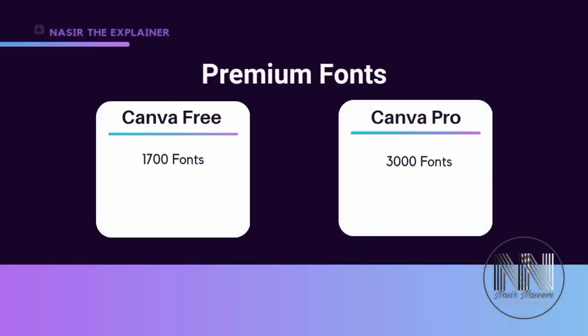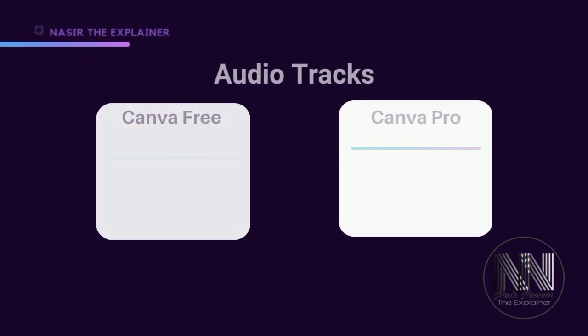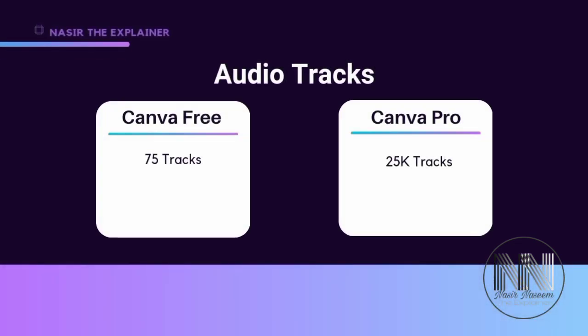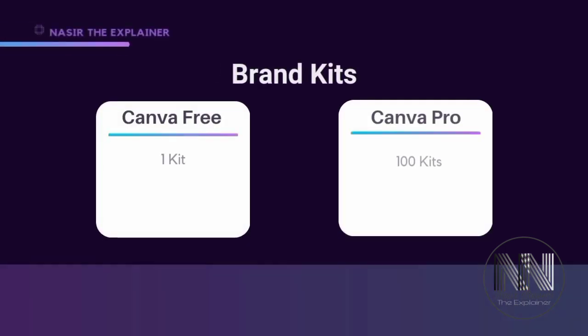There are 1,700 fonts in the free version, whereas the number is roughly doubled in the Pro version with approximately 3,000 fonts. In terms of audio tracks, Canva Free contains only 75 tracks, whereas Canva Pro provides 25,000 free audio tracks.